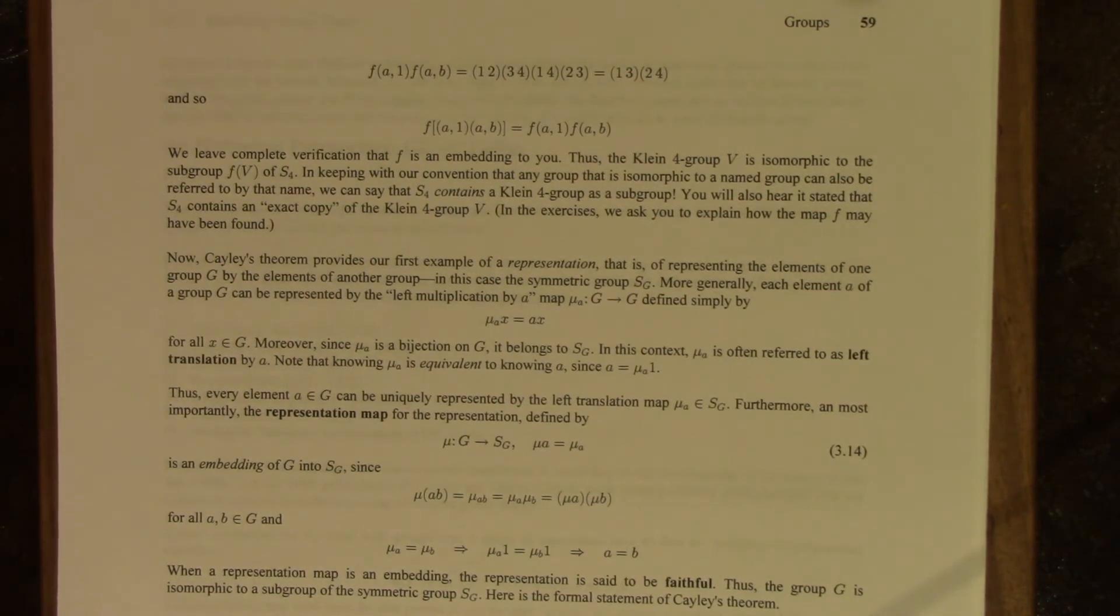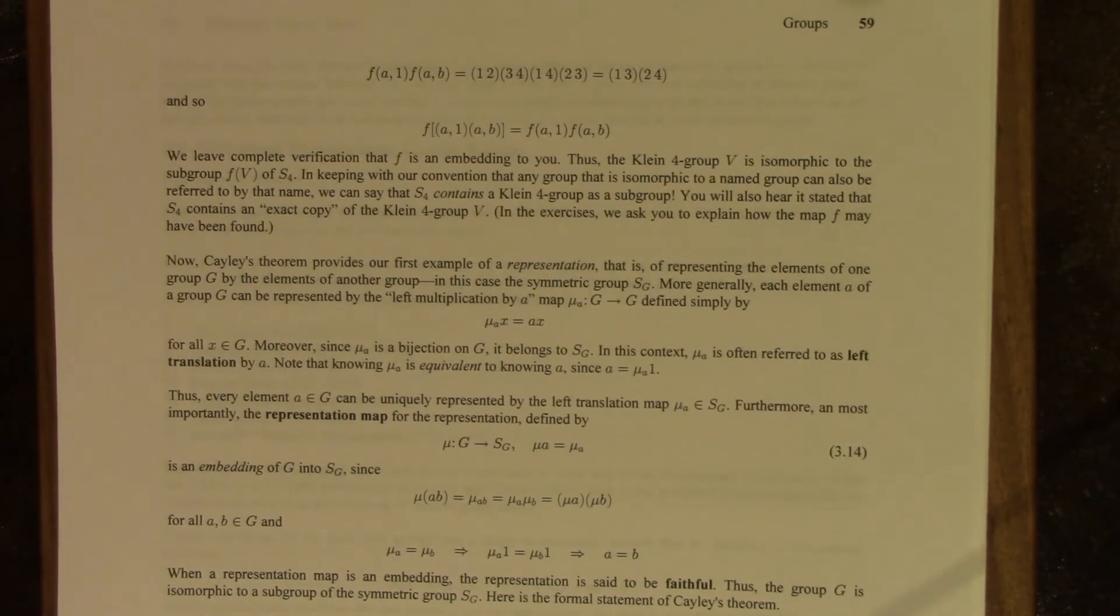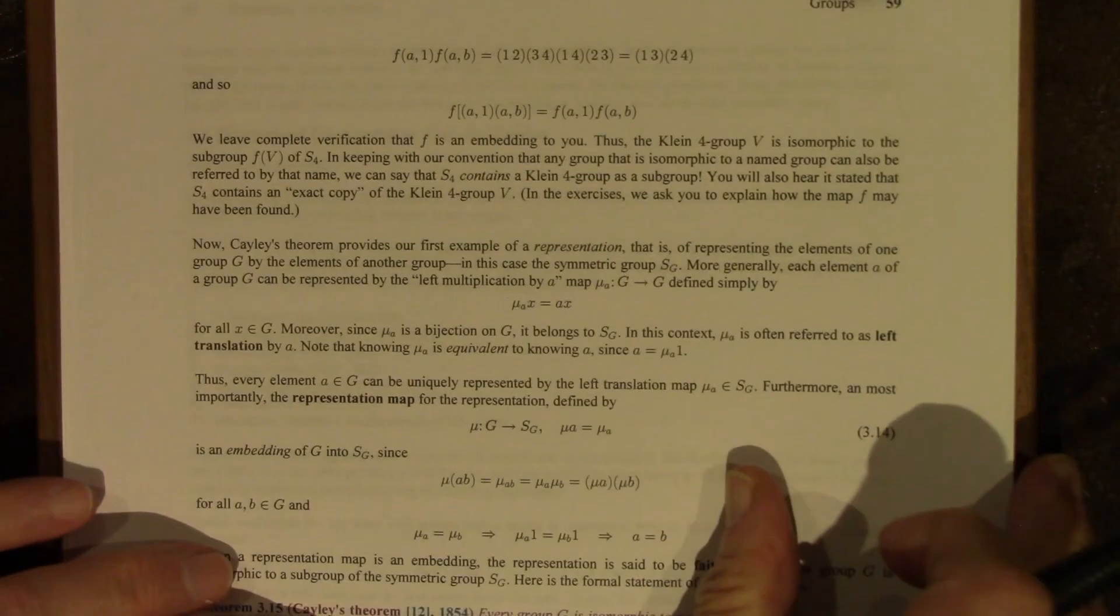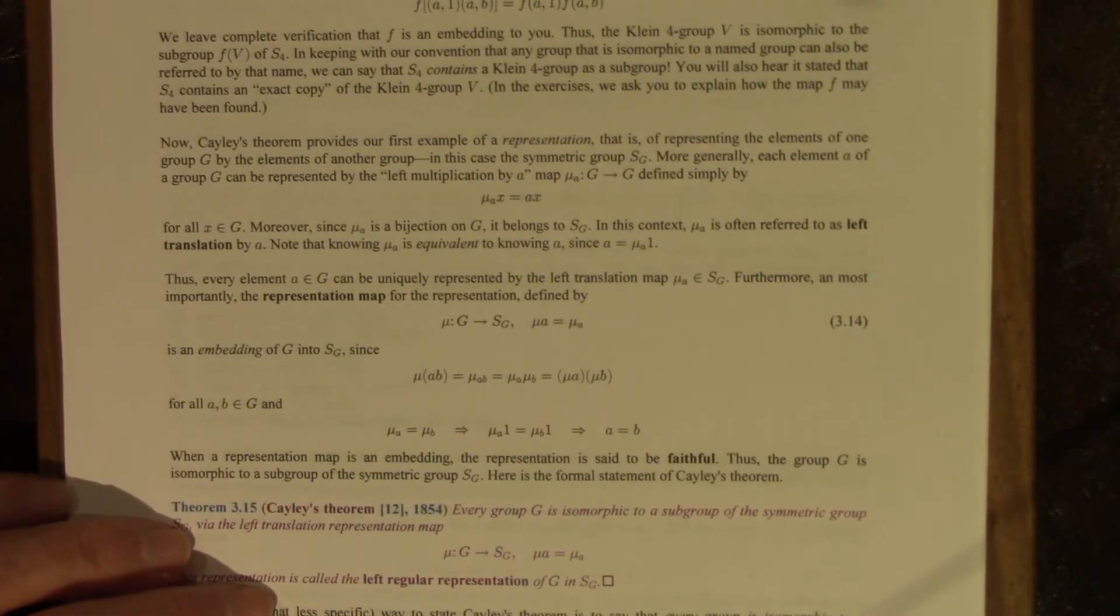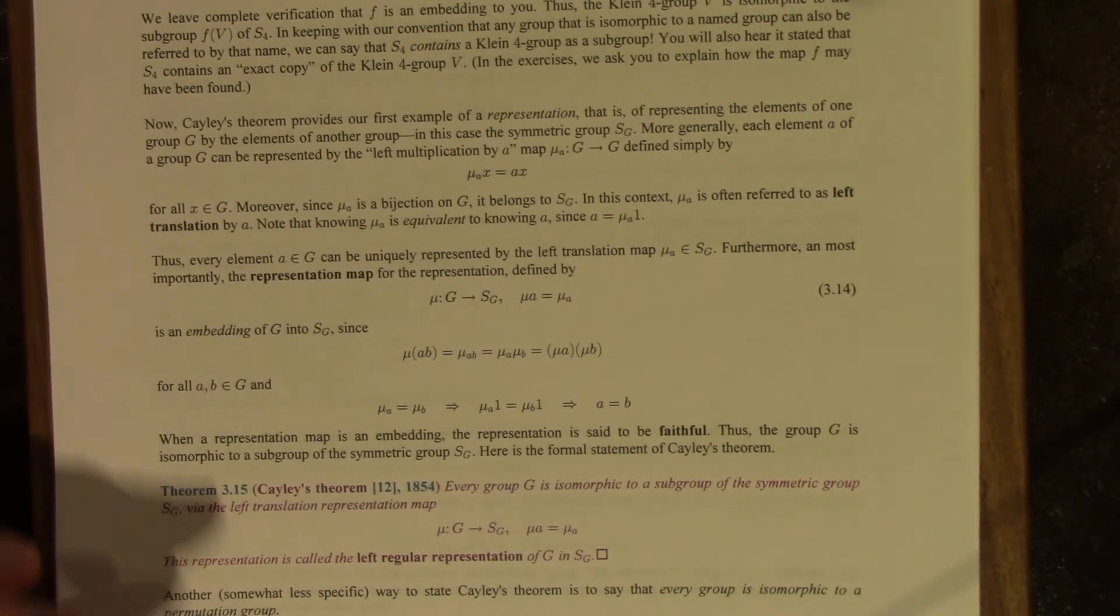A group isomorphic to a named group, such as the quaternion group, or the Klein four group, can also be referred to by that name. They're isomorphic, essentially the same group, same group structure, deserves the same name. We can say that S4 contains a Klein four group as a subgroup. You might hear it more commonly said that S4 contains an exact copy or an isomorphic copy of the Klein four group.